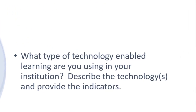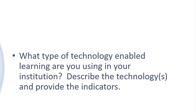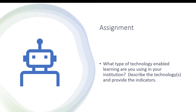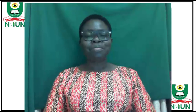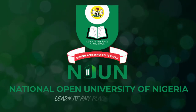With this, you have an assignment to complete. The assignment asks: what type of technology-enabled learning are you using in your institution? Describe the technology or technologies and provide the indicators. Work on this assignment and we shall discuss it when we get to class. Thank you for listening.